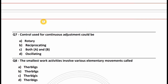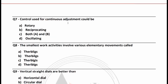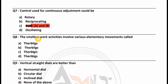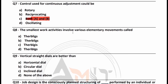A control used for continuous adjustment could be: rotary, reciprocating, both A and B, or oscillating. The right answer is option C, both A and B. The smallest work activity involving various elementary movements is called a Therblig. Option C is the right answer.